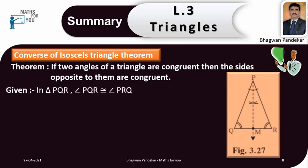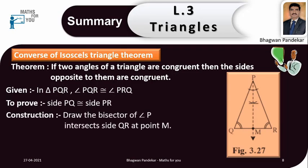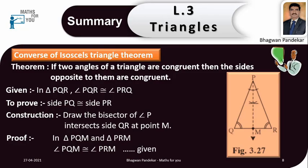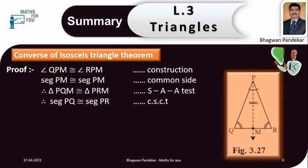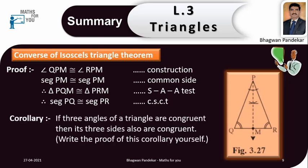Observing this figure, we can write the given information. In triangle PQR, angle PQR congruent angle PRQ. To prove: side PQ congruent side PR. Construction: draw the bisector of angle P, intersecting side QR at point M. Proof. In triangle PQM and triangle PRM: angle PQR congruent angle PRM — given. Angle QPM congruent angle RPM — construction. Segment PM congruent segment PM — common side. Therefore, triangle PQM congruent triangle PRM by SAA test. Therefore, segment PQ congruent segment PR — congruent side of congruent triangle.